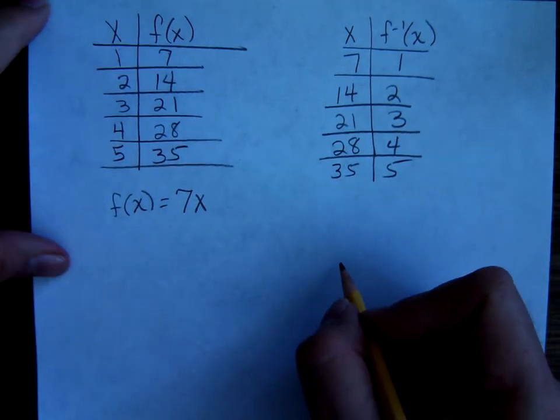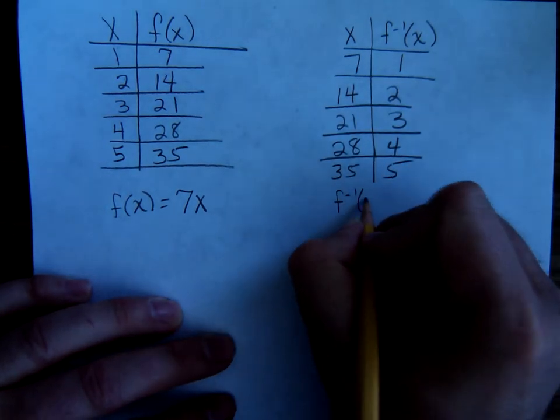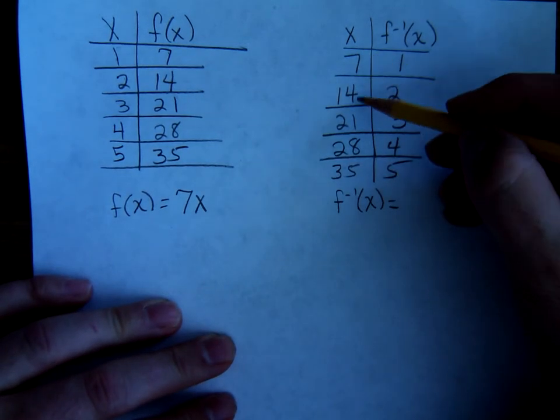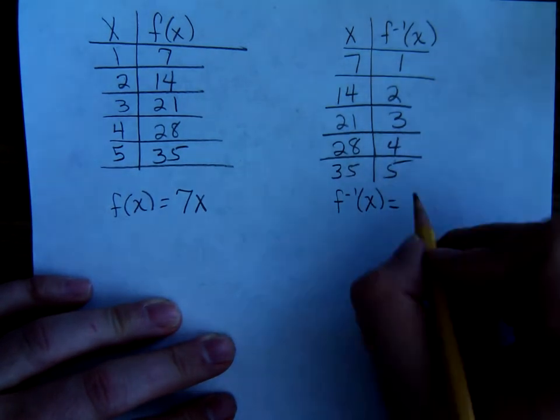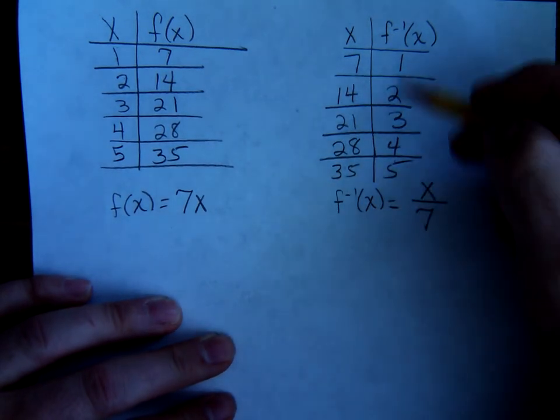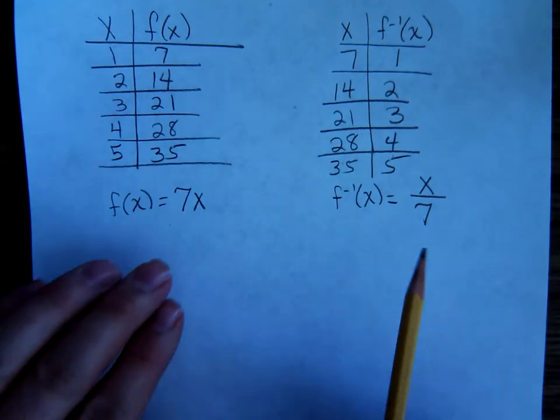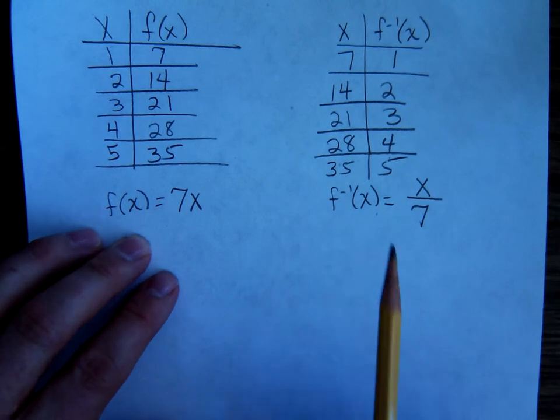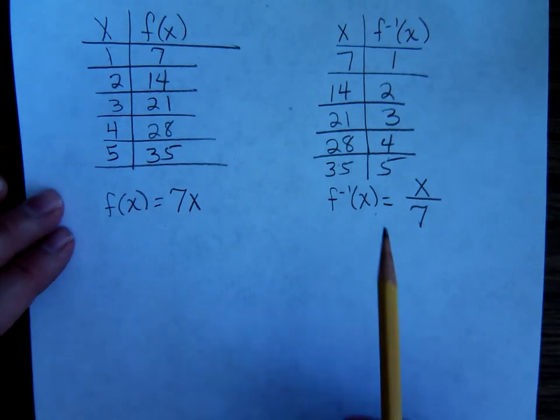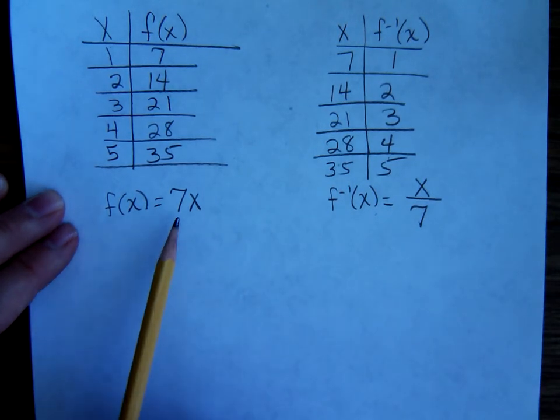Yes, that's right. And over here it's inverse, well, what are we doing to these numbers to get these over here? Someone said it, you're dividing by 7. You take each one of these numbers and divide by 7. And then try to come up with a formal definition for inverse functions.